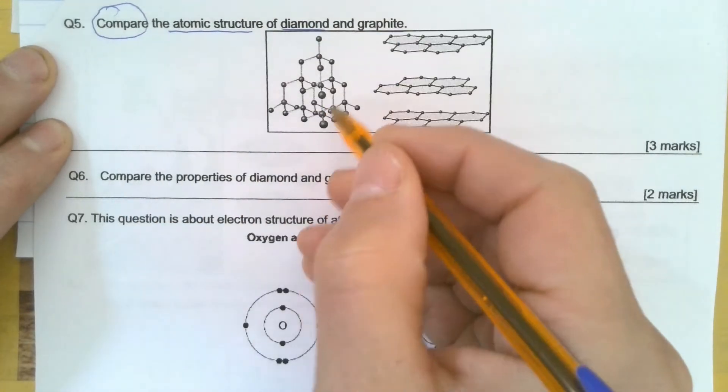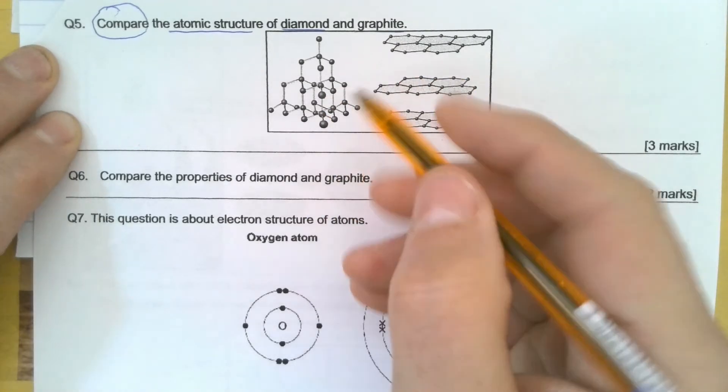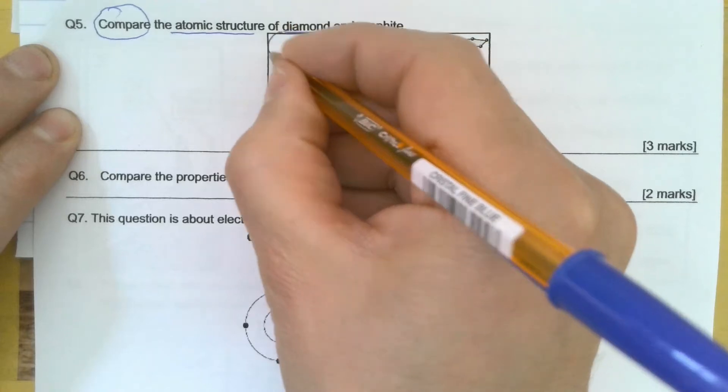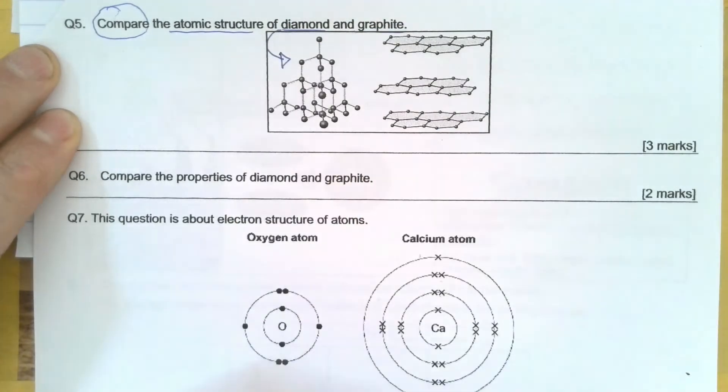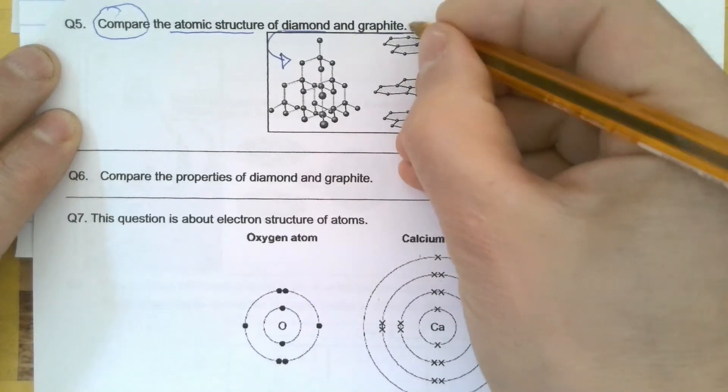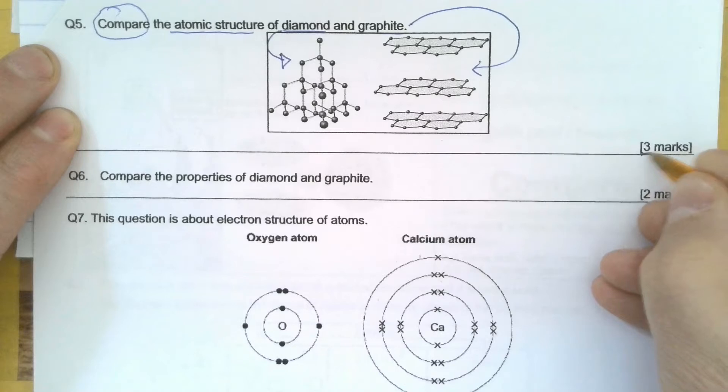Here we've got a diagram showing two sets of atomic structures. In case you're not sure, this may well be labelled, but might not be. That one's diamond and this one's graphite over here. It's worth three marks.